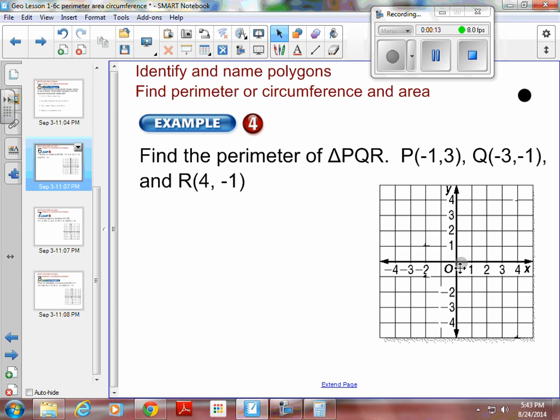So P is at negative 1 and at 3. 1, 2, 3. So there is P. And Q. Q is at negative 3, negative 1. So there's Q. And R. R is at 4, negative 1. And that's R.